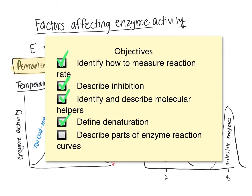In this video, we identified how to measure reaction rates, described inhibition, and identified and described molecular helpers — both inhibition and molecular helpers being part of temporary changes to enzyme activity. For permanent changes, we defined denaturation as a permanent change in the shape of our enzyme, which reduces the ability of the enzyme to interact with the substrate. We looked at two curves — one for temperature and one for pH — and examined the different parts of the enzyme reaction curves and how they relate to enzyme function. I hope this video was helpful. Thanks for watching.